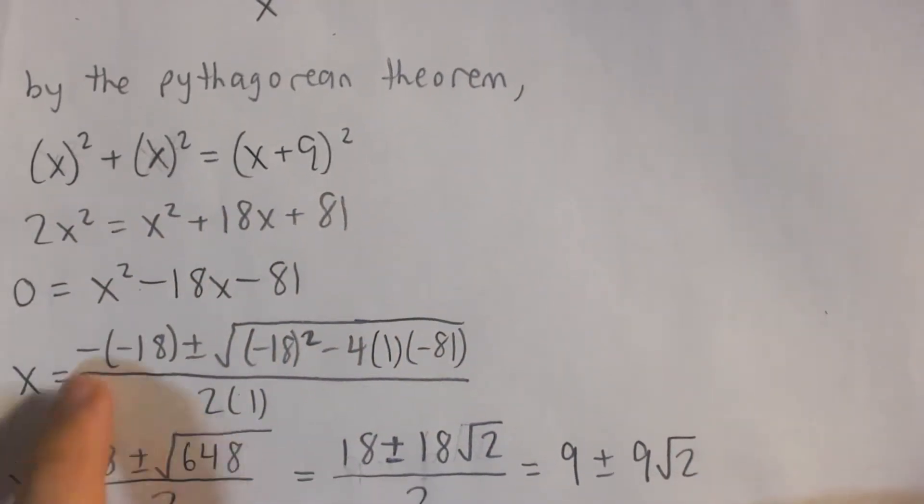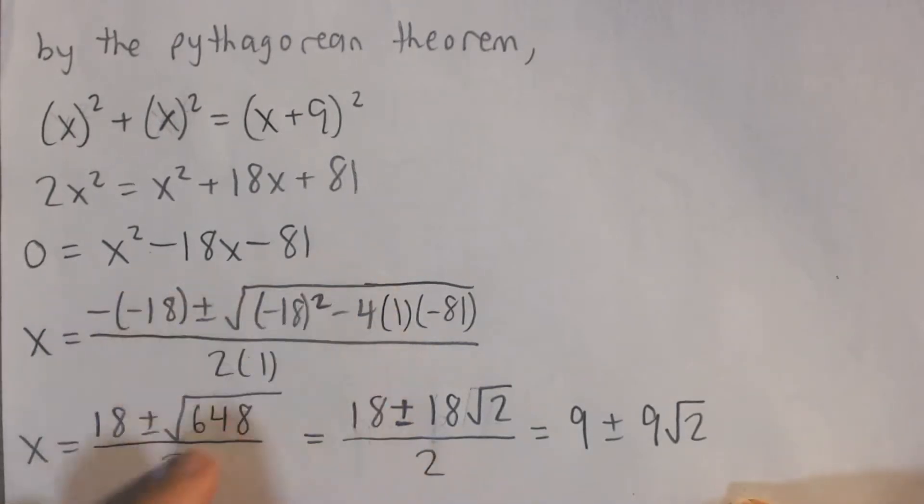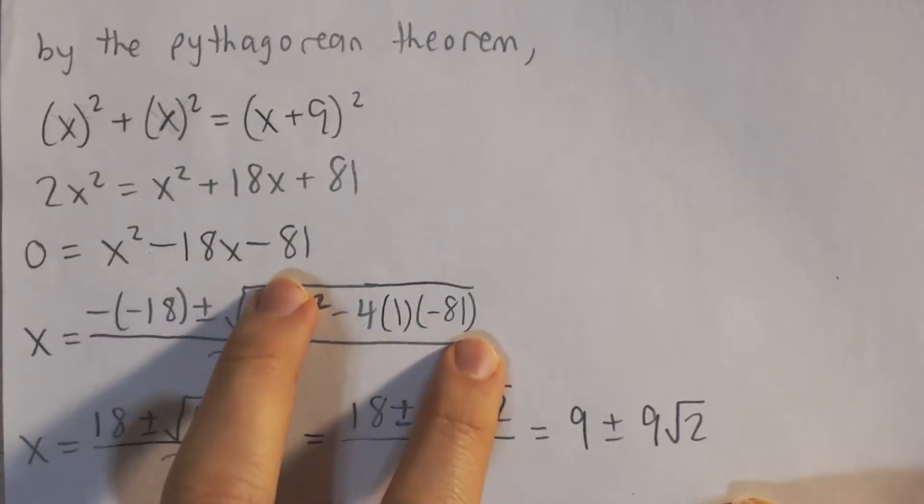And now, you can try factoring this, but you can't factor it. And so what we're going to do is use the quadratic formula. And so plug in our a, b, and c values. So negative b plus or minus square root of b squared, negative 18 all squared, minus 4 times a times c, all divided by 2a.